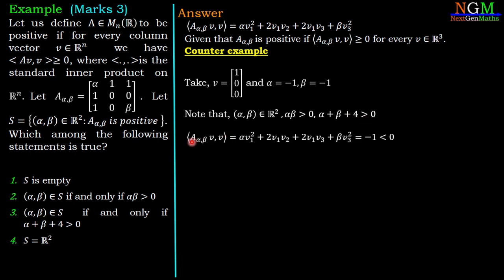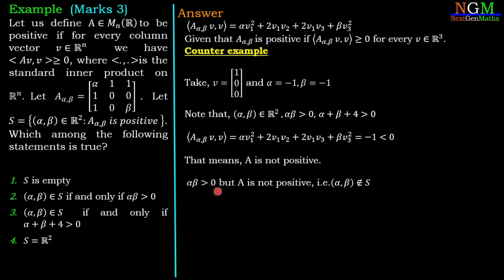Now we evaluate the inner product ⟨A(α,β)v, v⟩ by substituting v₁ = 1, v₂ = 0, v₃ = 0 and α = -1 into the simplified expression. The last three terms vanish, and the first term gives α·v₁² = (-1)(1) = -1, which is less than zero. Therefore A(α,β) is not positive for this choice, meaning αβ > 0 does not guarantee A is positive, so (α,β) does not belong to S.